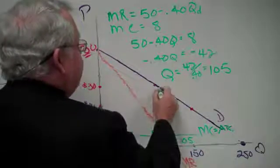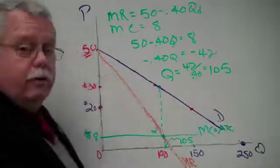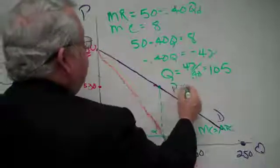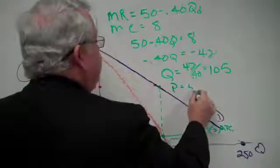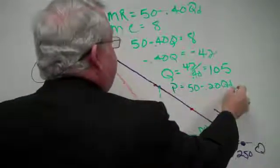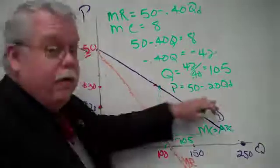And that's associated with what price? Remember how to do that? Price was what? 50 minus 0.20 QD. Remember that? The inverse demand equation.